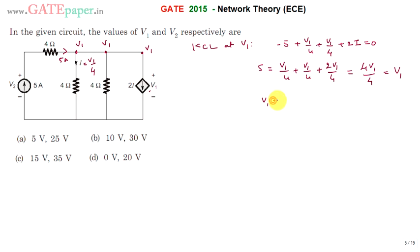V1 is equal to 5 volts. V1 value is 5 volts. So directly we can say the answer is A itself.